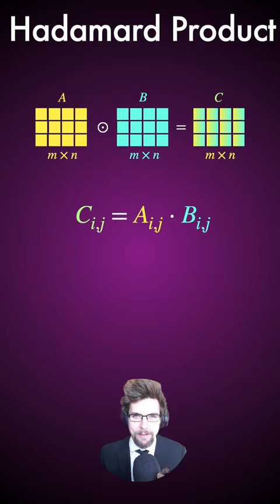For example, to calculate C_{2,1}, we multiply A_{2,1} and B_{2,1}. To use a Hadamard product, the matrix sizes must be the same.